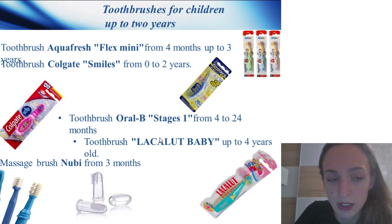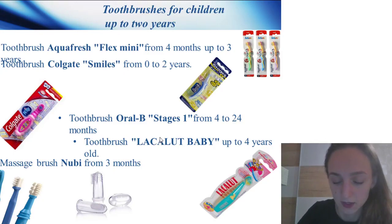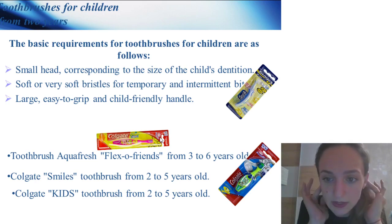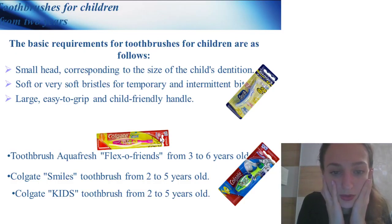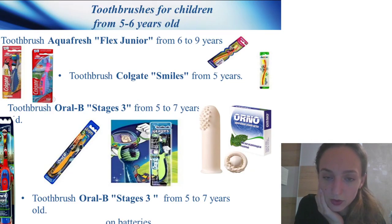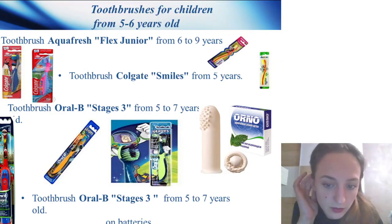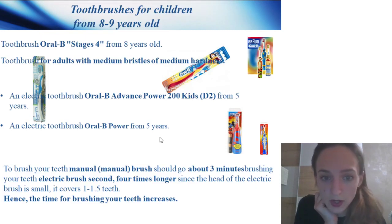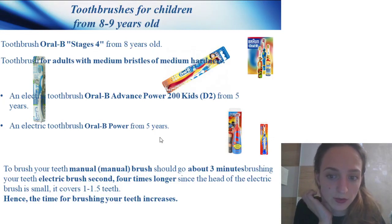Requirements for toothbrushes: the age of the patient must be taken into account. The most optimal working part is 2.5–3 cm; the cleaning head should be round with synthetic texture bristles. Indicator brushes determine the operation time and it is necessary to change toothbrushes every 2–4 months. For children up to two years: Aquafresh Flex Mini, Colgate Smiles, or Oral-B Stage 1. Basic requirements for children's brushes: small head, soft and very soft bristles for temporary and mixed bite, large easy-to-grip child-friendly handle.